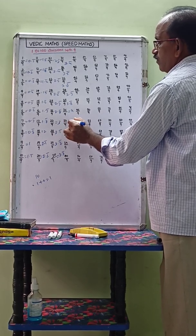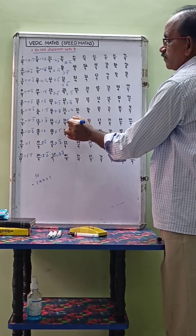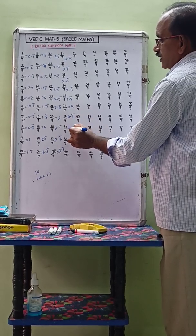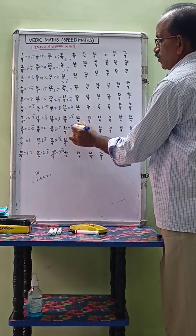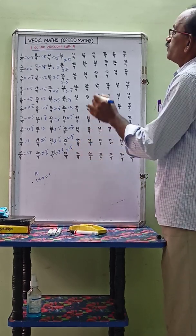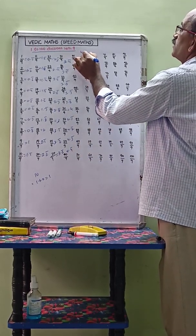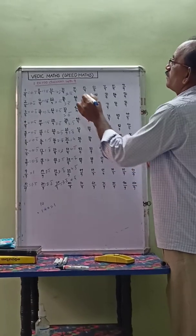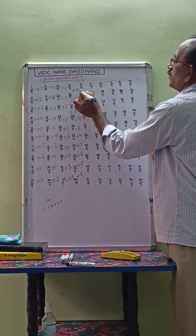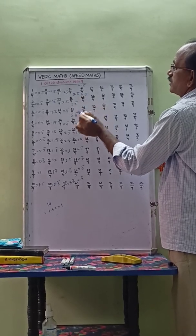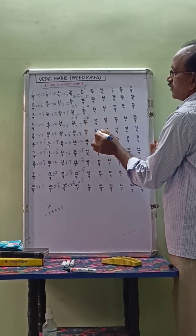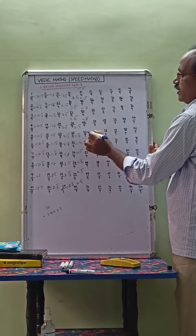37 by 9 equals 4.1 bar. Sum of the digits equals 10, digital sum equals 1, so 4.1 bar. 38 by 9 equals 4.2 bar. 39 by 9 equals 4.3 bar. 40 by 9 equals 4.4 bar. 41 by 9 equals 4.5 bar. 42 by 9 equals 4.6 bar. 43 by 9 equals 4.7 bar. 44 by 9 equals 4.8 bar. 45 by 9 equals 5.